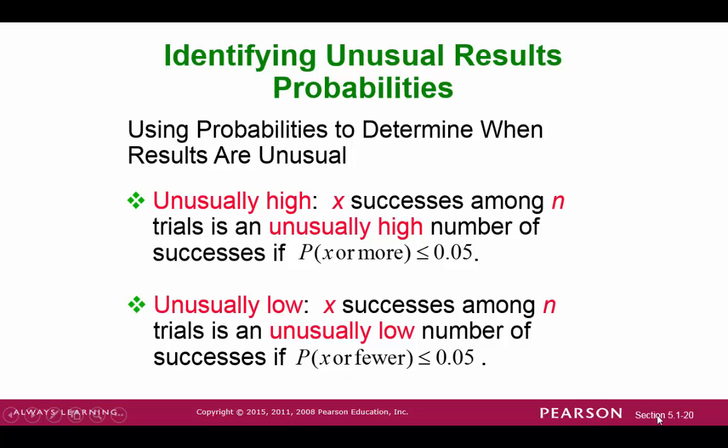In this last slide, we take a look at identifying unusual results using probabilities. So the idea is that if the probability is less than 5% for getting something that's more than a particular value or getting something that's less than a particular value, then we would consider that unusually high or unusually low. So there'll be more on this as we dive deeper into probability distributions.